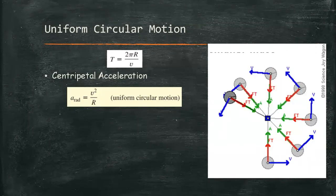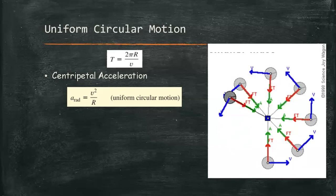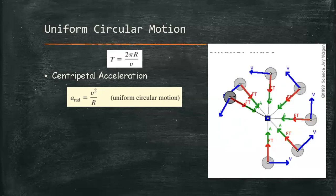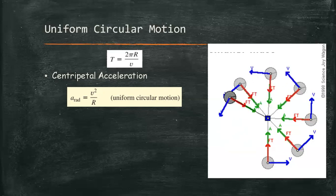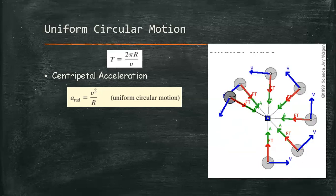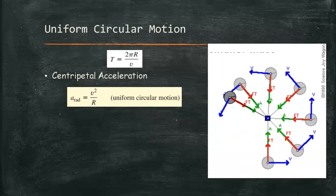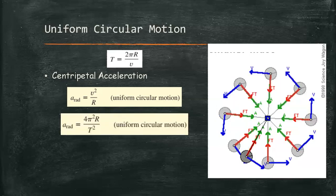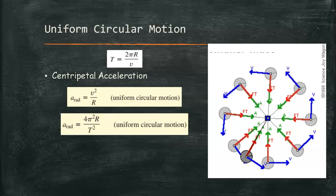The subscript 'rad' is a reminder that at each point, the acceleration is radially inward toward the center of the circle, and it is perpendicular to the velocity. We can also express this centripetal acceleration in terms of period by substituting the value of the velocity into the formula.